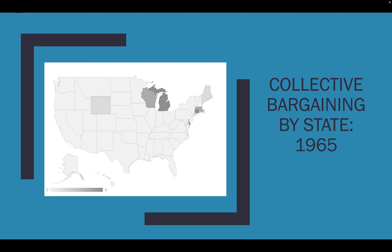This map shows what collective bargaining rights looked like by state, because this is typically a state policy area. You have some states that have public employee collective bargaining and some states that don't. In 1965, Wisconsin had some public employee groups, and Michigan and maybe some in the Northeast. Darker areas indicate that more public employees were covered by legislation granting collective bargaining rights, while lighter areas show none. Very few states had extended collective bargaining rights to public employees in 1965.